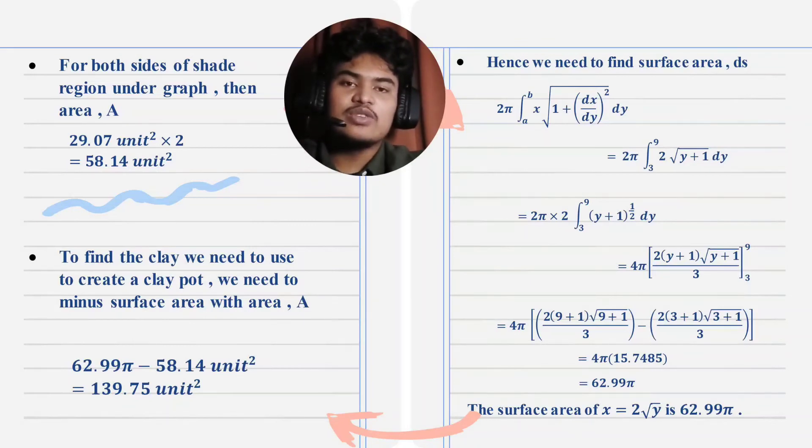Then, we need to find the surface area of the graph while using the formula of 2 pi times integration from a to b of x times square root of 1 plus dx over dy squared dy. Then, we can get the answer of the surface area is 62.99 pi.